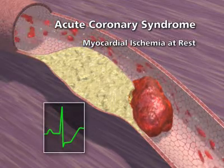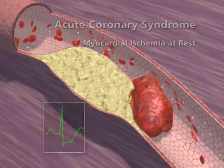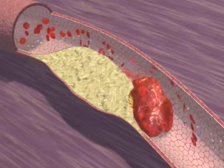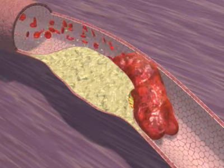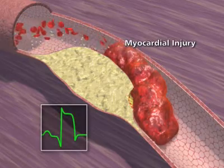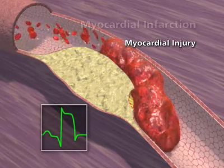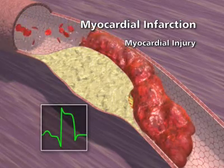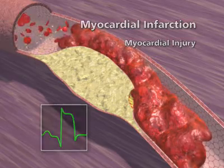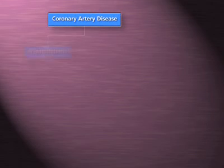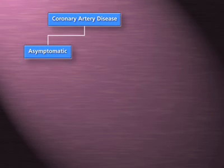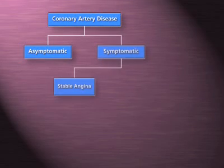In contrast, when the thrombus completely occludes the vessel, the myocardium is injured and the syndrome of ST segment elevation myocardial infarction develops. In summary, patients with coronary artery disease may be asymptomatic, they can have stable angina, or they can suffer an acute atherothrombotic event.